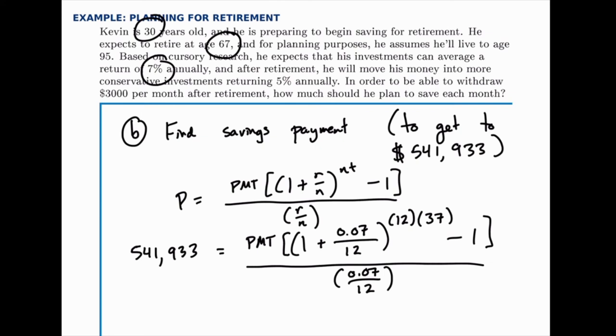So now to solve for PMT, what we'll do is simplify everything on the right-hand side, except for PMT, and then divide 541,000 by all of that. So we won't show the steps here, just for simplicity, but we would calculate everything in the brackets, and get a single number, and then divide that by this answer here, 0.07 divided by 12, and then take that final answer, divide 541,933 by that.